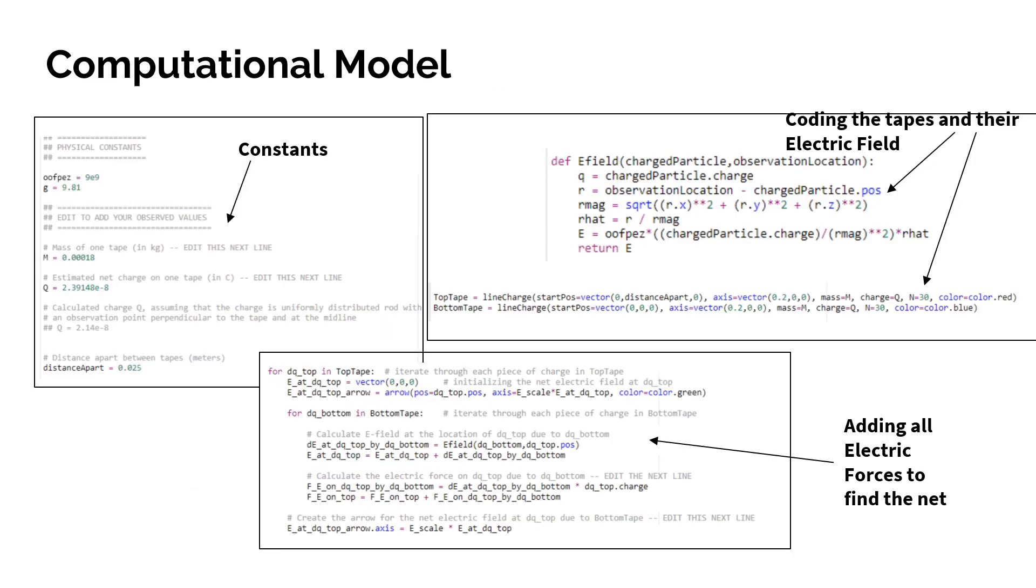Here we can look at our computational model that we developed. In the top left, we have the constants that we're going to be using. In the top right is the part where we start coding the tapes in the electric field. So what we do is we're setting up the electrical field of a point charge. However, what we're doing is approximating the integral of the entire length of the charge tape by creating 30 points all together for each tape.